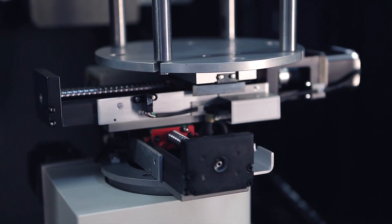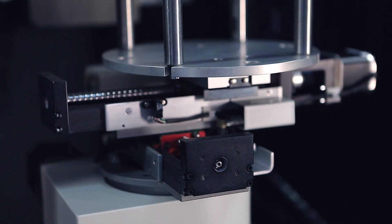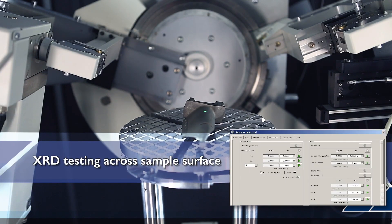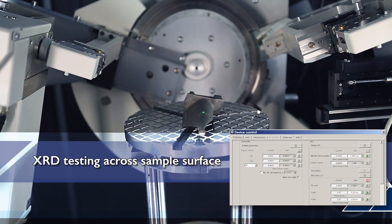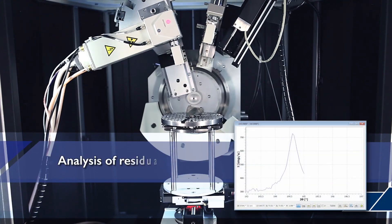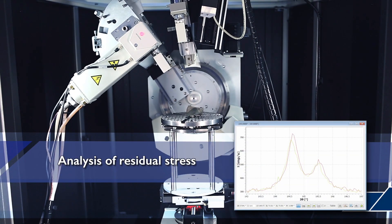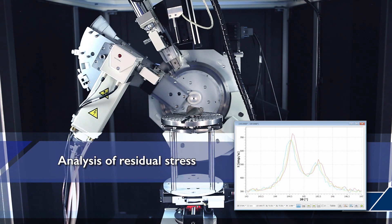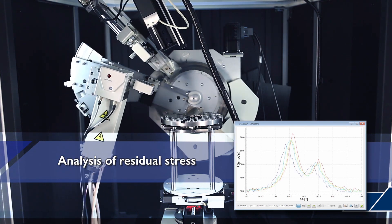Two automatic carriages of the sample holder move the required area into the X-ray beam to perform testing across sample surface. For example, one can analyze residual stresses in different points of a turbine blade.